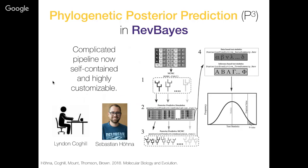Once you've collected your data, you can read it in, run your typical Bayesian MCMC analysis, and from the values sampled in your MCMC, you can go ahead and simulate new datasets, calculate various kinds of test statistics from those data, and then do the comparison of your simulated null distribution to your empirical data. Now that the pieces of this pipeline are in place, it's not that difficult to go in and add new test statistics. Users can add new models and apply existing model fit tests, or design new model fit tests and apply them to new models. It's highly customizable. This P3 framework in RevBayes was largely due to the efforts of Sebastian Herna and Linden Coghill, who was a postdoc in my lab.